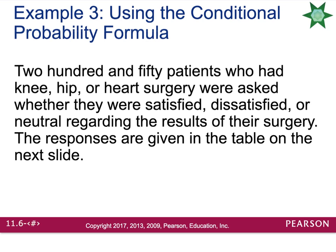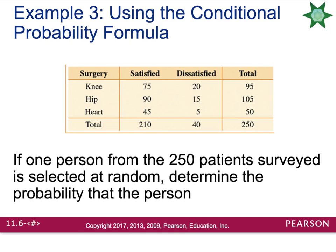Let's look at an in-depth example. You'll have several of these on your homework where they provide tables. 250 patients who had knee, hip, or heart surgery were asked whether they were satisfied, dissatisfied, or neutral regarding the results of their surgery. Reading across the table: knee surgery patients — 75 were satisfied, 20 were dissatisfied, for a total of 95. Hip patients — 90 were satisfied, 15 were dissatisfied, 105 total. Heart patients — 45 were satisfied, 5 were dissatisfied, 50 total.